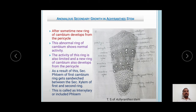After some time, a new ring of cambium develops from the pericycle — this is the anomalous origin of cambium. This abnormal cambium ring shows normal activity: secondary xylem is produced intracambially and secondary phloem extracambially. The secondary phloem and secondary xylem show the presence of conjunctive tissue. A third ring then develops again from the pericycle, and this continues. As a result, the secondary phloem of the first cambium gets sandwiched between the secondary xylem of the first and second rings.